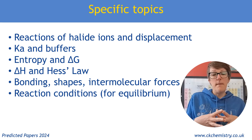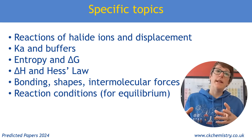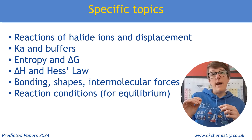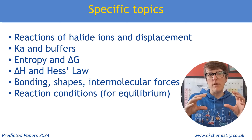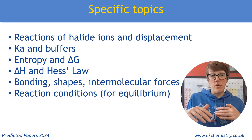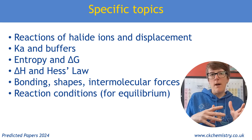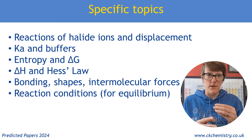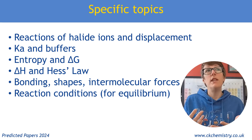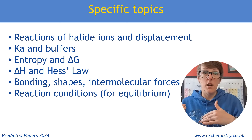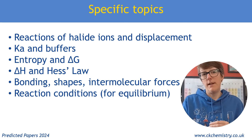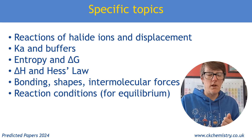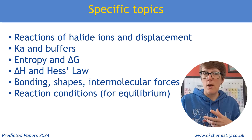Reaction conditions for equilibrium: those six-mark questions where they talk about why a particular reversible reaction would have a particular set of temperature and pressure conditions in industry. Looking at compromised temperatures — for example, an exothermic reaction needing a high enough temperature for rate but low enough temperature for a decent yield. There are loads of six-mark questions on that, and it's a popular area for longer questions. We've already had a long catalyst question this year, but nothing much on equilibrium position.